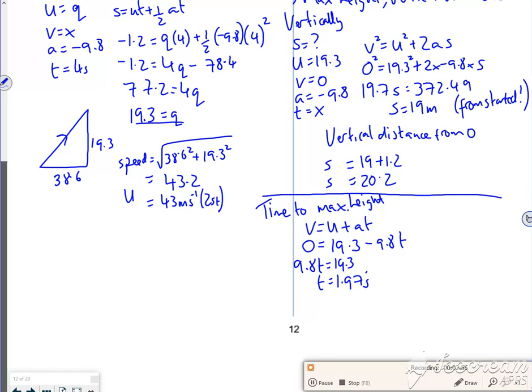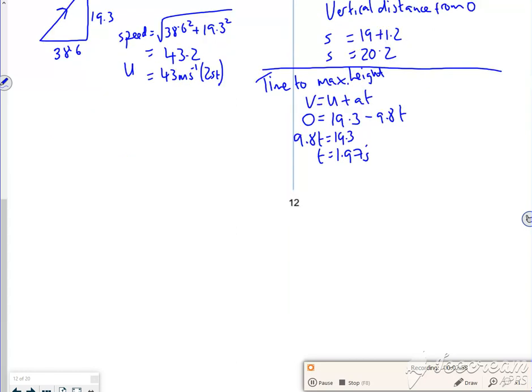I'm going to use that to get the horizontal distance now, so I want the horizontal. That's going to be using S equals UT plus a half AT squared, where the half AT squared is gone, so U was 38.6, and the time is 1.97, so that gives me roughly 76 metres.